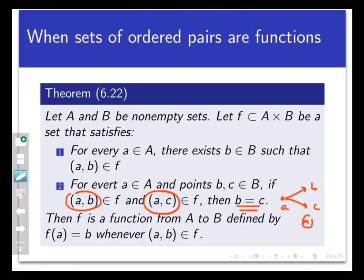So now we have an idea of how to tell whether a random subset of A cross B defines a function from A to B. In the next video, we're going to put this idea to work on a very important concept that's at the core of this section. So stay tuned.